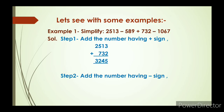Now Step 2: add the numbers having a minus sign before them. From the question, those numbers are 1067 and 589. We write 1067 first because it is the greater number. After adding these two, we get 1656.